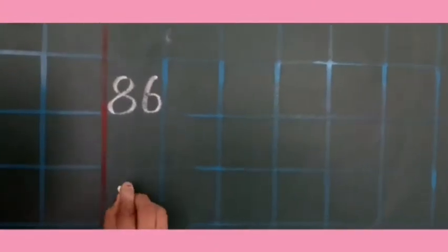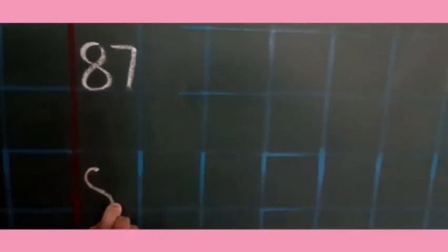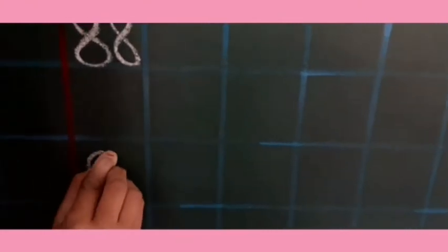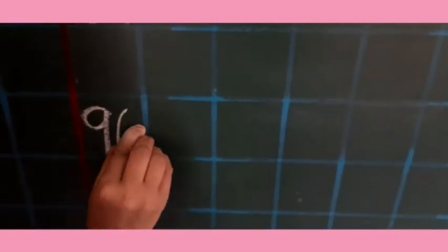And what comes after 86? Yes. Leave one box and write 87. And then 88, 89. And leave one box and last number is 90.